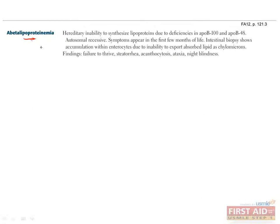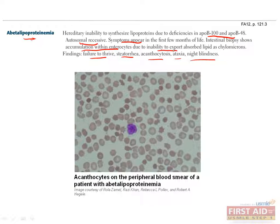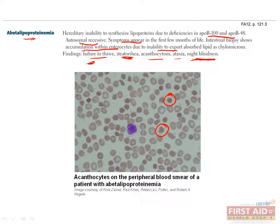Now we'll end with the hypolipoproteinemia called abetalipoproteinemia. This is a rare autosomal recessive disease which results in an inability to synthesize lipoproteins due to deficiencies in ApoB100 and ApoB48. Symptoms start to appear soon after birth, and include failure to thrive, steatorrhea, acanthocytosis, ataxia, and night blindness. Without these apolipoproteins, chylomicrons can't be produced, so lipids accumulate within enterocytes and can't be exported into lymphatics or the blood. This ultimately means you'll stop absorbing lipids, causing steatorrhea, which in turn causes failure to thrive and inability to absorb fat-soluble vitamins. The inability to absorb vitamin A causes night blindness. Acanthocytosis, seen as spiky-shaped erythrocytes, occurs due to lipid imbalance in their membranes. There is no real treatment for this disease, but patients should be supplemented with fat-soluble vitamins.